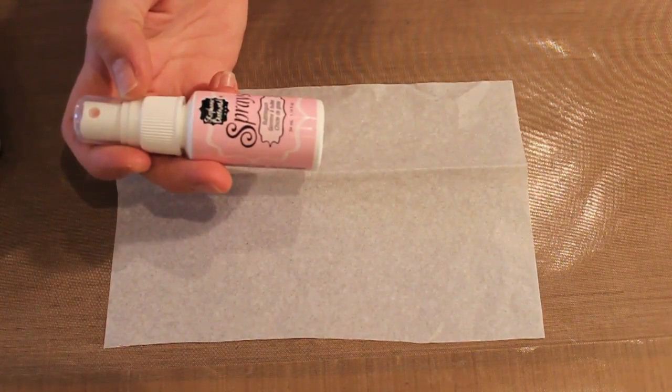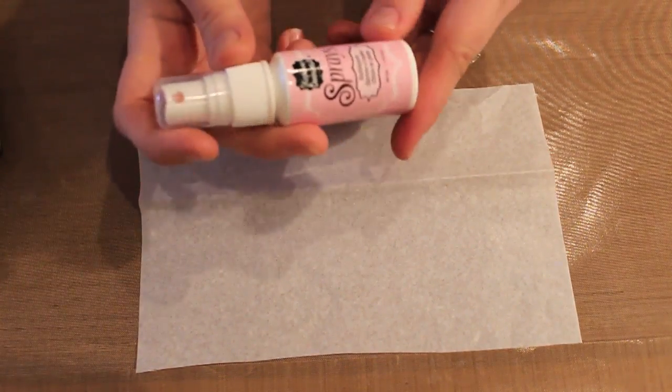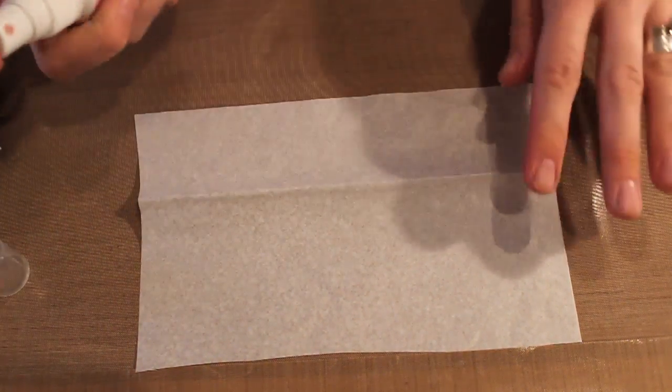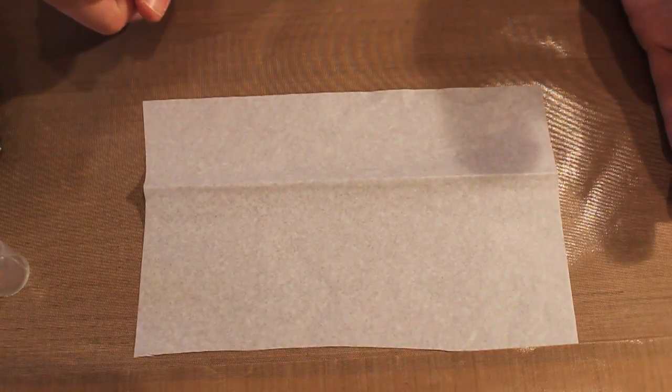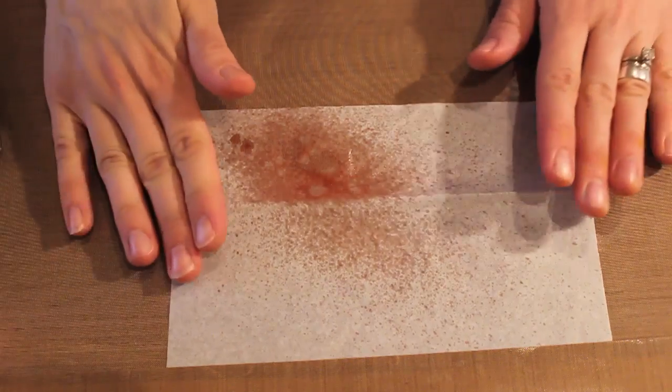Now the spray that I'm using is from Clear Snap. This is Stephanie Bernard and this is bubblegum pink. It's a really nice pale pink and this is a dye ink. So I'll just give it a spritz like that and I need to let it dry.